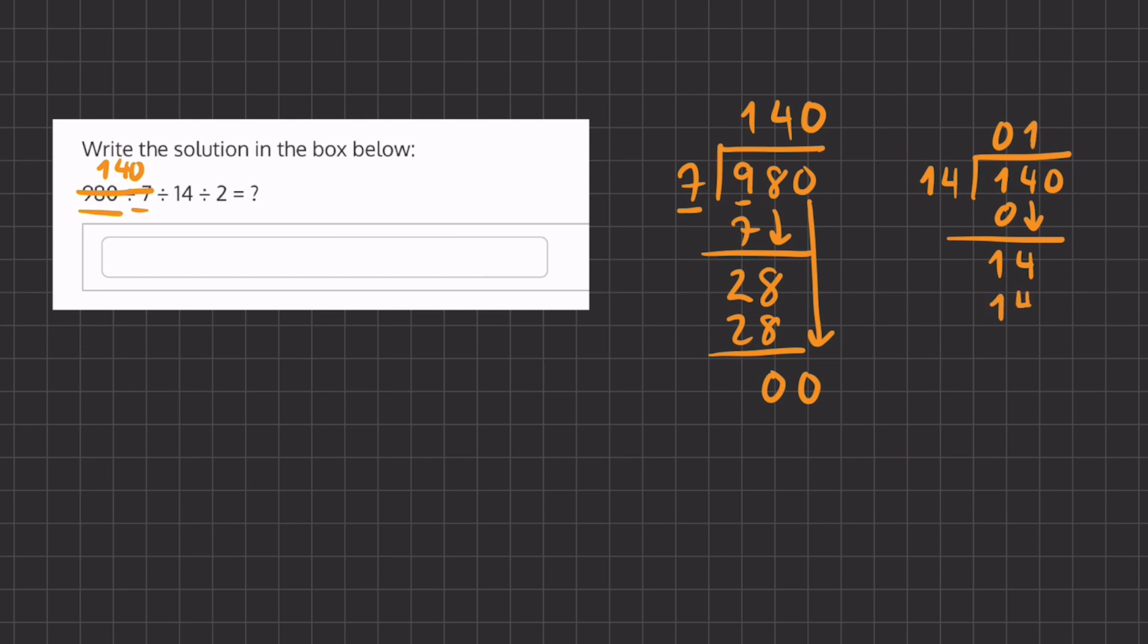So 14 times 1 is 14. We'll have a remainder of 0, and we'll carry down our last 0 here, and ask ourselves how many times does 14 go into 0.